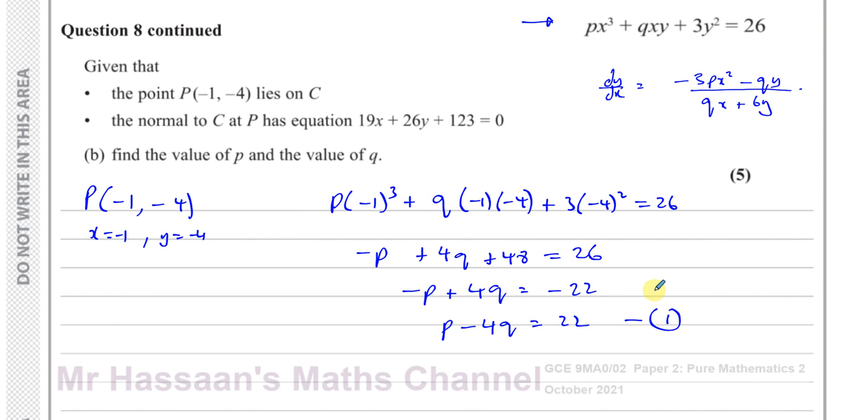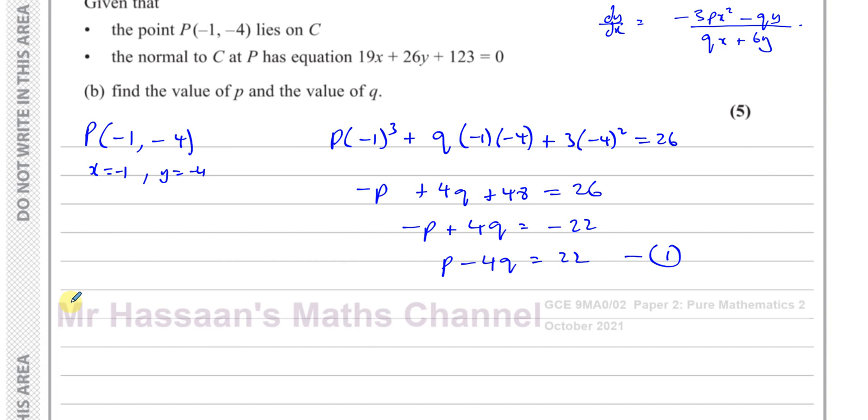All right, so that's one equation. And then from the other bit of information, the normal to C has equation 19x + 26y + 123 = 0. That is the equation of the normal. So let's find the gradient of the normal. Okay, let's rearrange this to make y the subject. So you have 26y equals -19x - 123. So y is -19/26 x - 123/26. So we can say that the gradient of the normal is equal to -19/26.